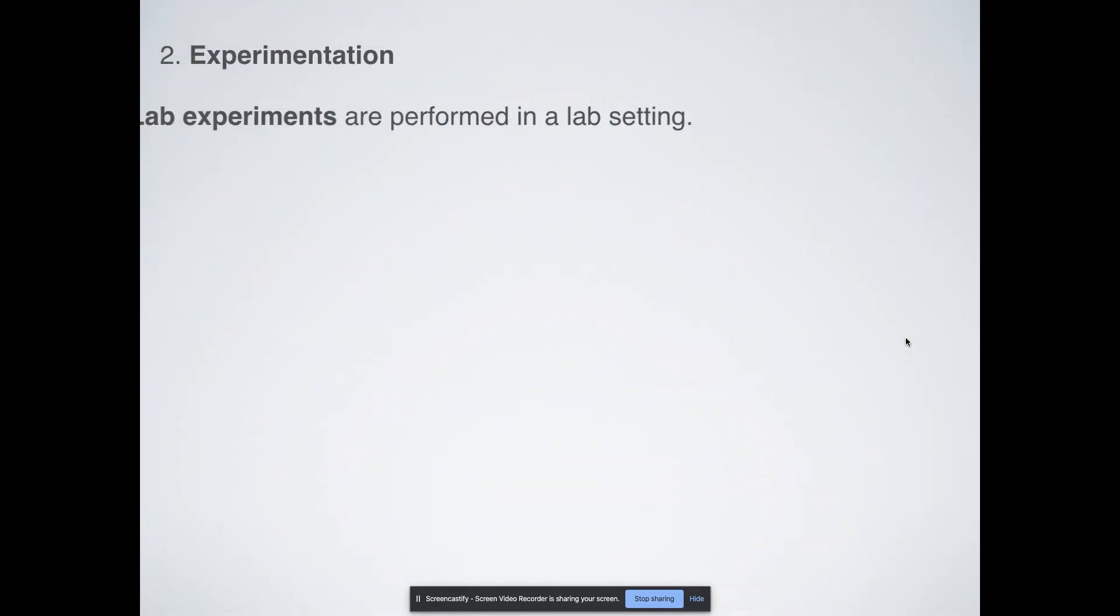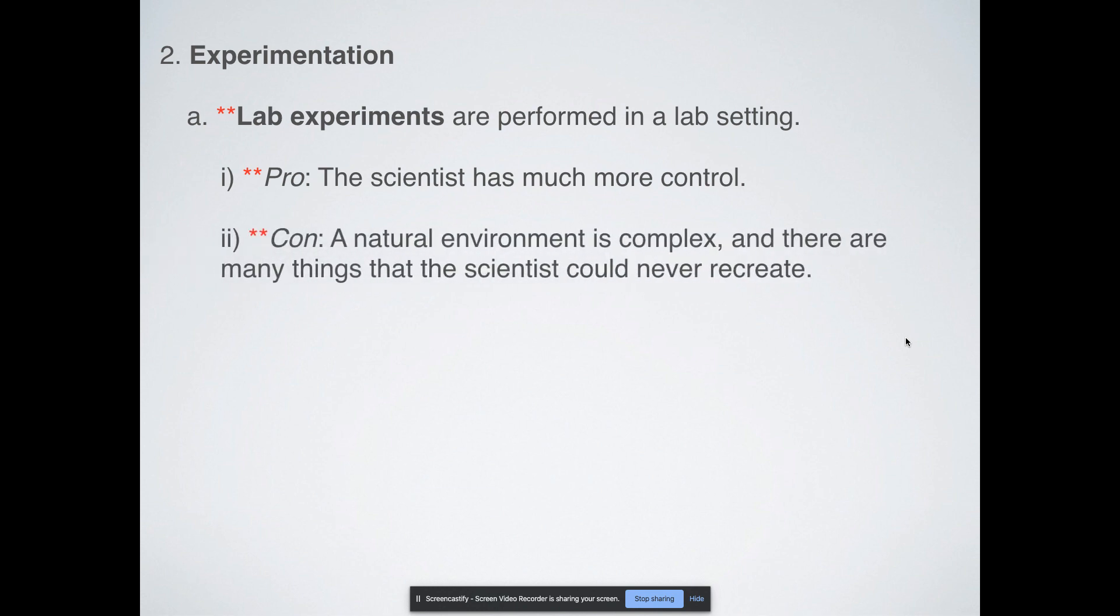Experimentation. Obviously, we can do experiments. We can do lab experiments, which is an experiment that you perform in a lab setting. In ecology though, that's not as really common. There are pros and cons. The first pro: scientists have much more control in a lab experiment than they do out in the field. But the con is that it's a natural environment right outside. So it's much more complicated. There are many things that you can never recreate in a lab setting.